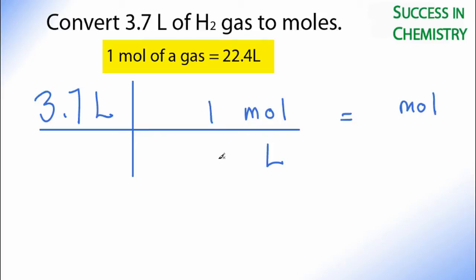I can see that one mole equals 22.4 liters for gases. When I do my math, 3.7 liters times one mole divided by 22.4 liters, the liters cancel out, so I'm left with 3.7 times one mole divided by 22.4.